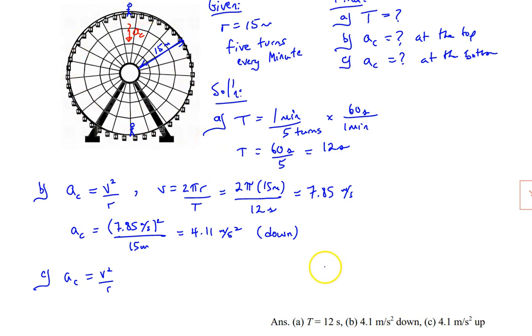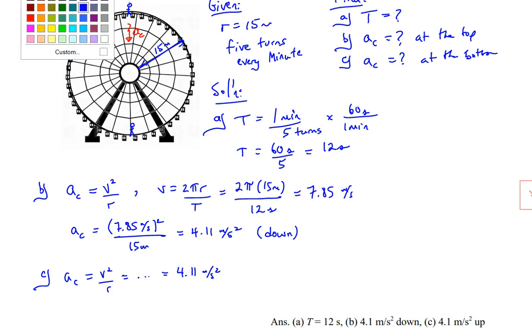So therefore, if I go through and plug in all the numbers, I'm going to get the same answer of 4.11 meters per second squared. The difference is that now she's at the bottom, and so now the center of my circle is towards the top. And so her acceleration direction is not going down anymore. It is up.